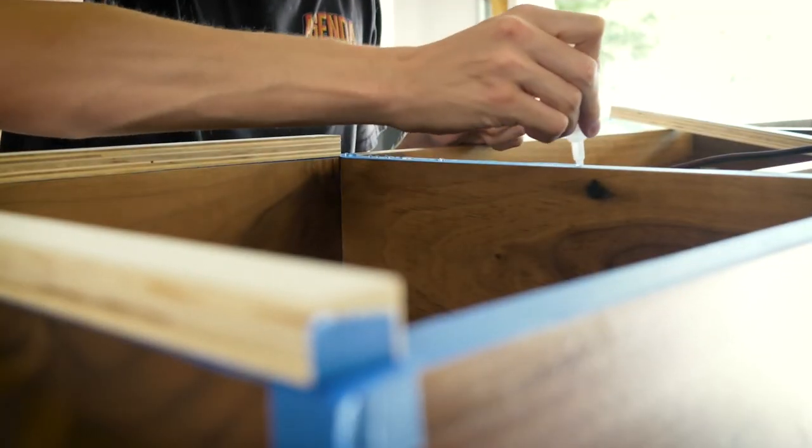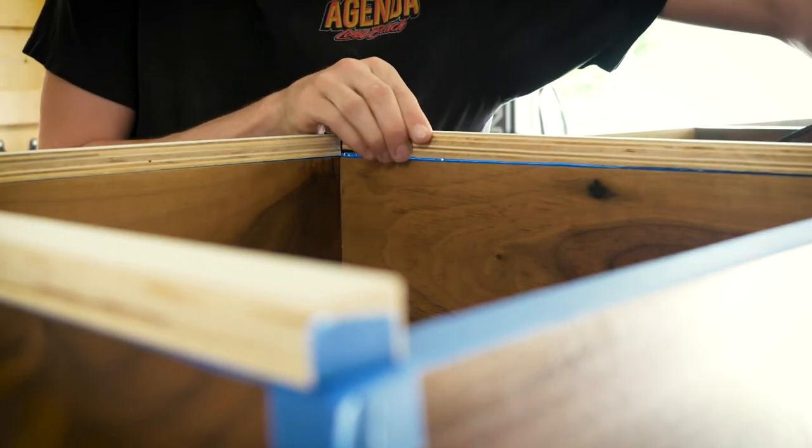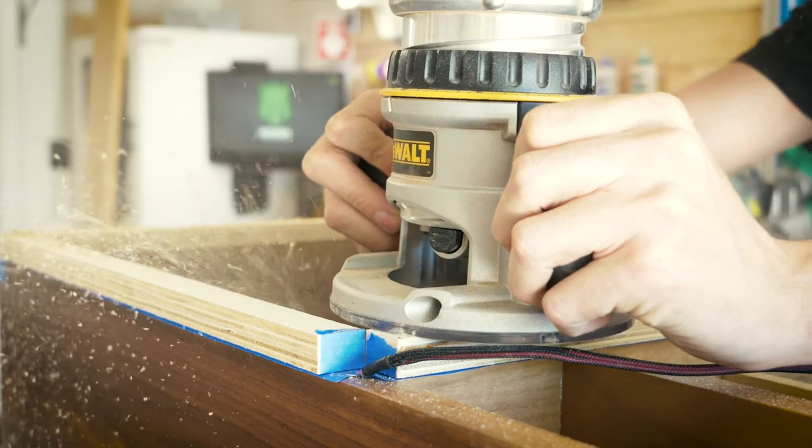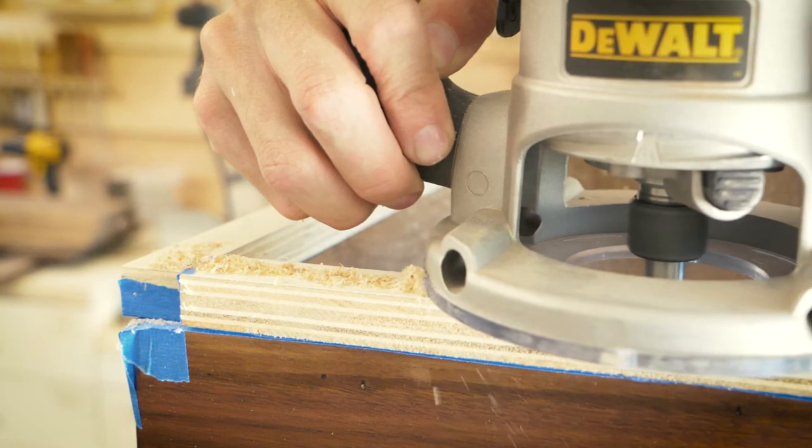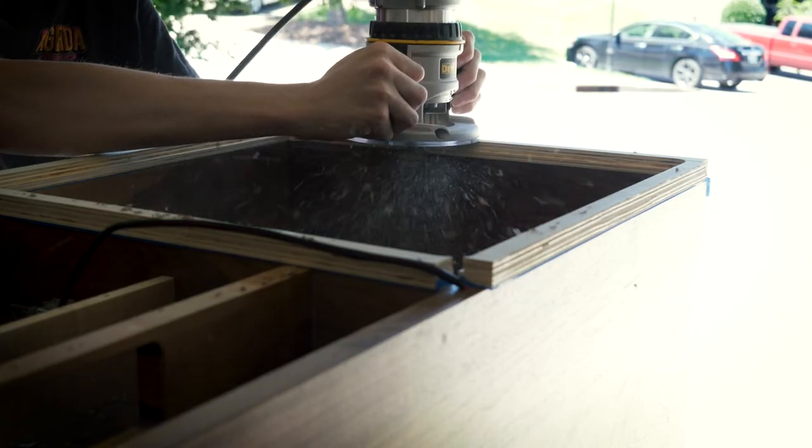Next I need to cut in my recess and my rabbit joinery for the back panel but because of my cable coming out the back because of the internal joinery I couldn't just run my router directly on the back side of the piece so I cut some plywood risers and I ran my router along this and cut the pieces and cut the recesses just the same.